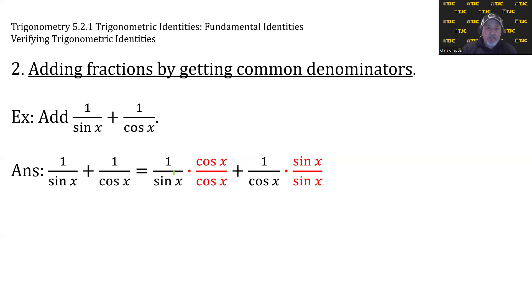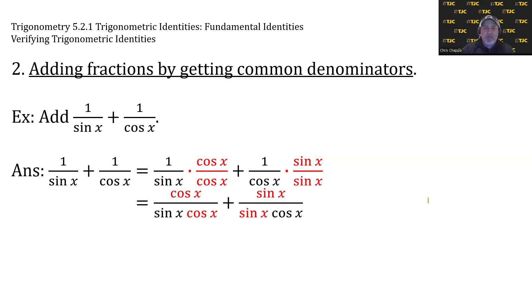For the first fraction, 1/sin x, we'd multiply it by cos x/cos x. For the second fraction, 1/cos x, we'd multiply it by sin x/sin x. That's because it sets up the same multiplication problem in the denominators, which guarantees common denominators. And when we do this, we would get (cos x)/(sin x cos x) + (sin x)/(sin x cos x). And when we combine them, we get (cos x + sin x)/(sin x cos x).